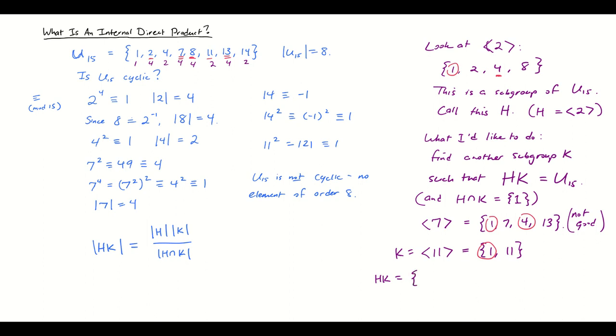So then HK is going to be the elements that I already had in H: 1, 2, 4, and 8, and then also 11. And then let's just see what we can get by multiplying elements of H times elements of K. So 2 times 11, 4 times 11, 8 times 11. Mod 15, that's going to be 1, 2, 4, 8, 11. 2 times 11 is 22, mod 15 that's 7. 4 times 11 is 44, mod 15 that is 14. And then 8 times 11 is 88, which is 13. So I think I get the entire group.